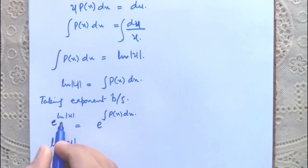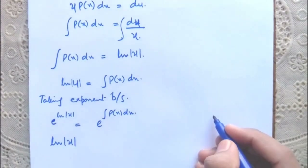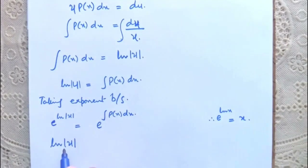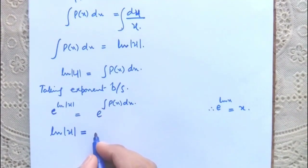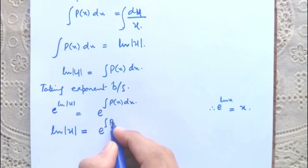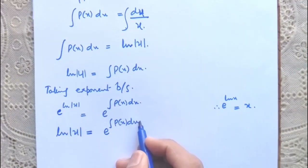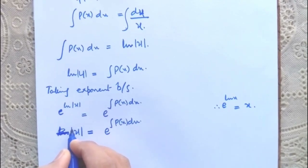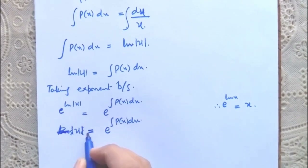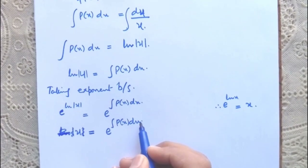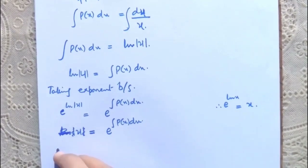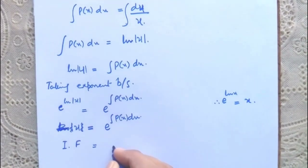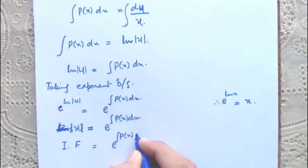Since e^(ln x) = x, we get μ = e^(∫P(x)dx). Since μ is the integrating factor, the integrating factor is equal to e^(∫P(x)dx).